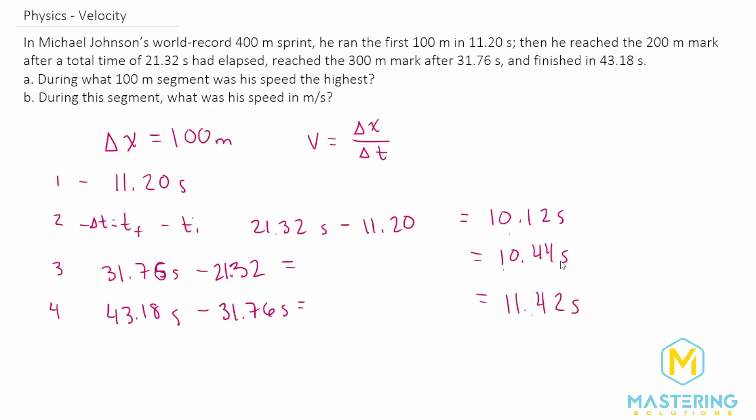So as we already discussed, whatever time was the smallest is going to give us the fastest velocity, which obviously goes to reason. So for section number two that was his fastest time and now we need to figure out what the actual velocity is for part b.